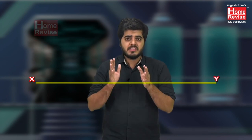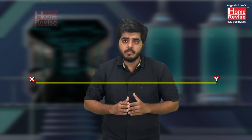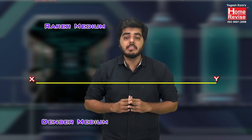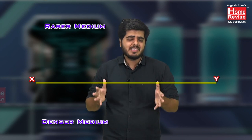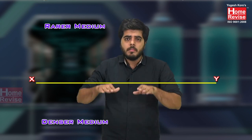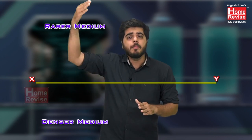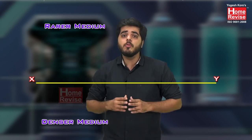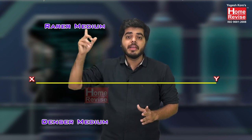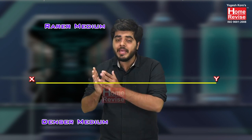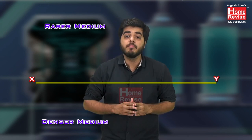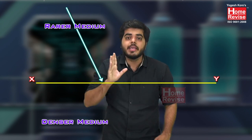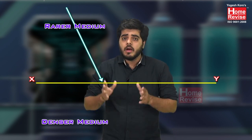Let us consider a surface named XY. This surface separates two media — above the surface is the rarer medium and below is the denser medium. Taking the example of a swimming pool: above surface XY is air (rarer medium) and below is water (denser medium).